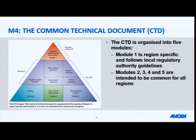CTD is made up of five key modules. Module 1 being your regional administrative information, and modules 2, 3, 4, and 5 follow your ICH specifications and are common across all regions. Today you're going to hear me use the word specifications quite frequently. We are talking about two sets of specifications.